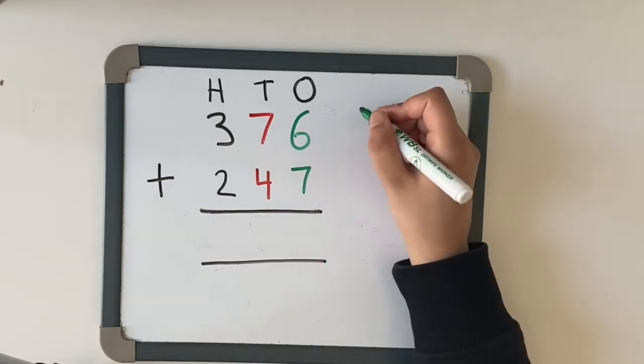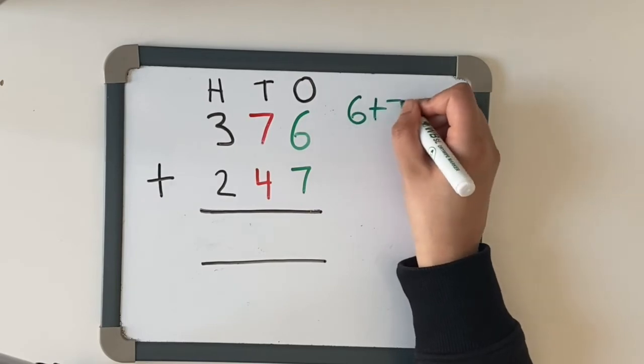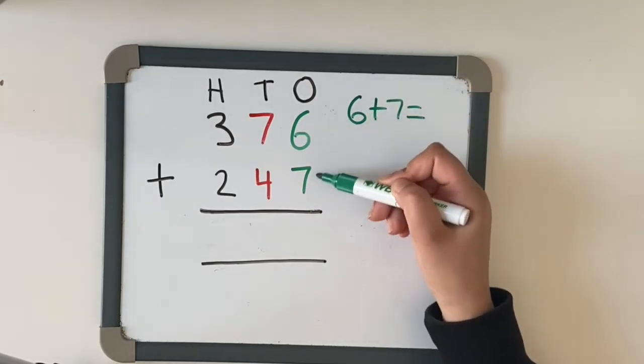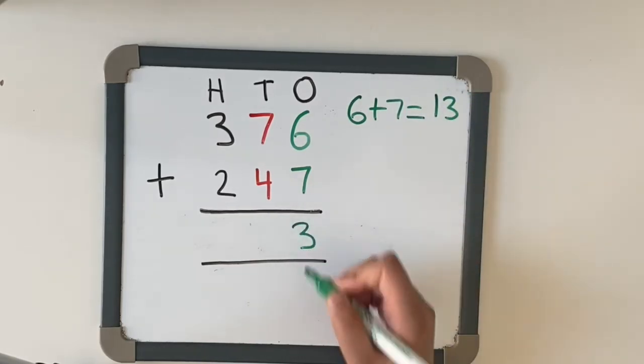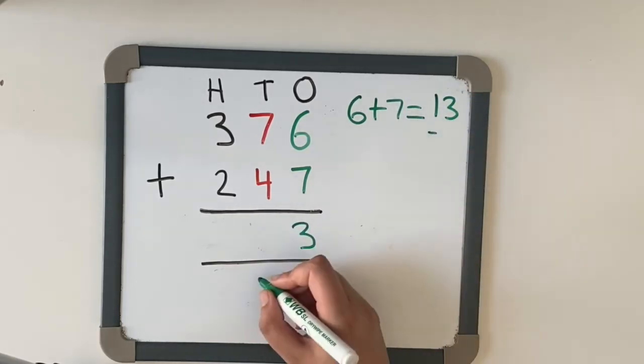So let's start off with six add seven ones. We're going to add these together. Six add seven equals thirteen. I'm going to put the three in there and we're going to carry our tens underneath the tens column.